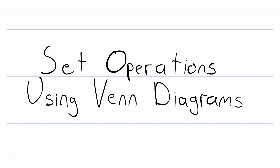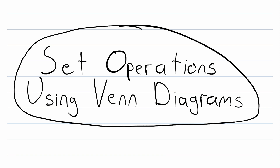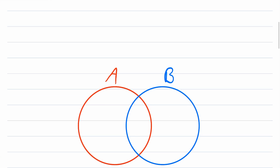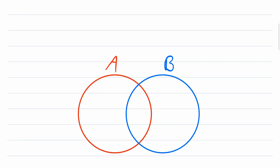Hey everyone, welcome back to Wrath of Math. In today's video we'll be going over set operations using Venn diagrams. I'm going to make this a fast-paced all-in-one lesson for basic set operations using Venn diagrams. This is a viewer requested video — be sure to leave your requests in the comments. We're going to go over set unions, intersections, relative complements, absolute complements, and the symmetric difference in this lesson.